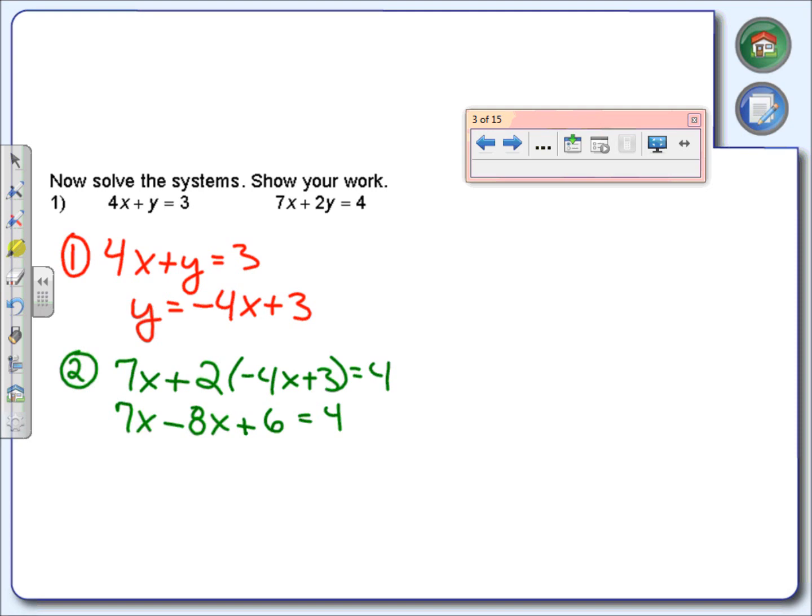So here's what I've got so far. Now I'm going to combine the like terms. 7x minus 8x gives me negative 1x. By the way, notice all this work we're doing right now is step number 3. Let's subtract 6. 4 minus 6 is negative 2. We're almost there - divide by negative 1. Negative 2 divided by negative 1 makes it positive 2. So our x value is positive 2.